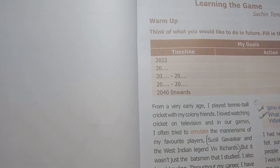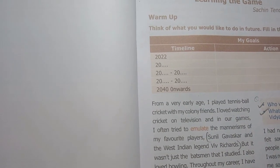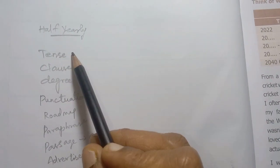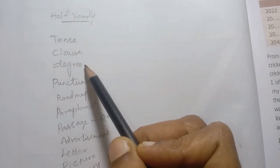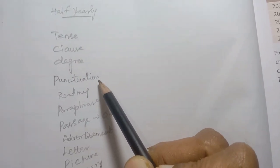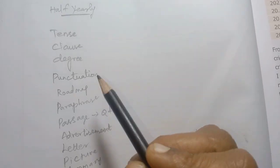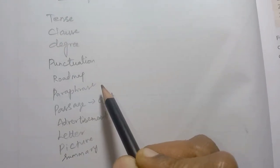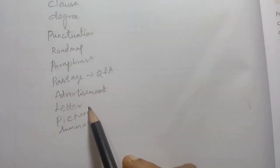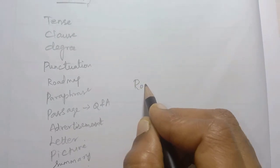First you prepare synonyms, antonyms, tense, grammar, class, degree, voice, speech, punctuation. Next: road map, paraphrase, passage, question answer, advertisement, letter writing, picture, summary, and then road map.